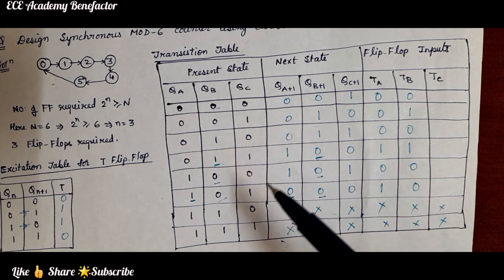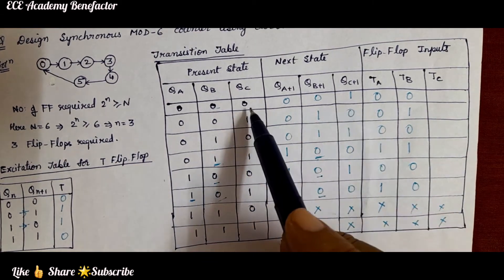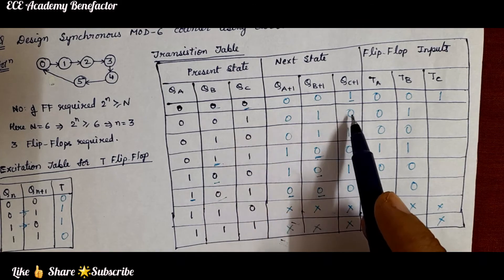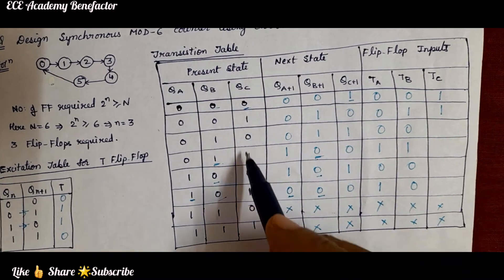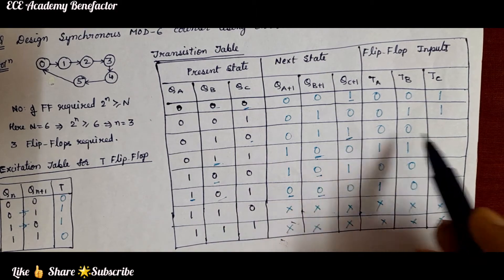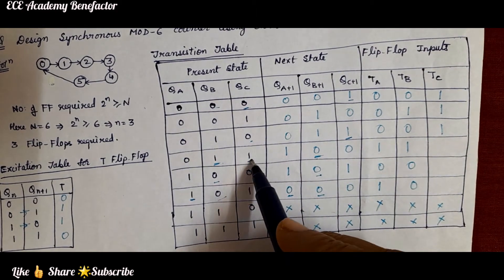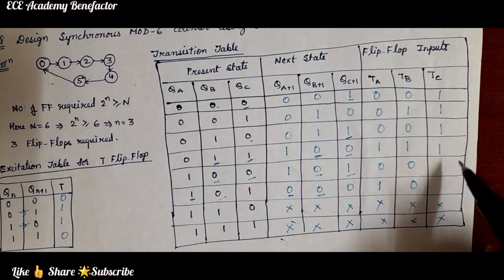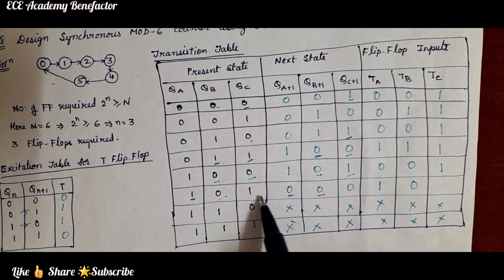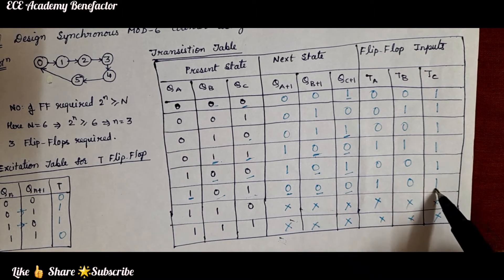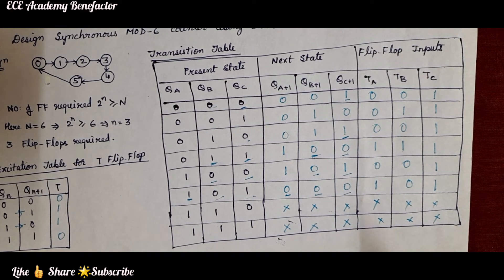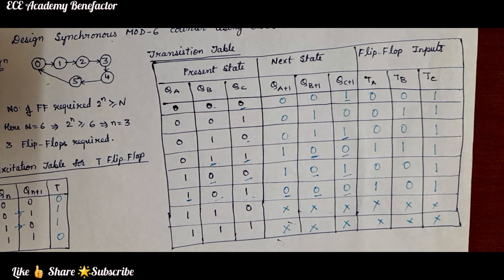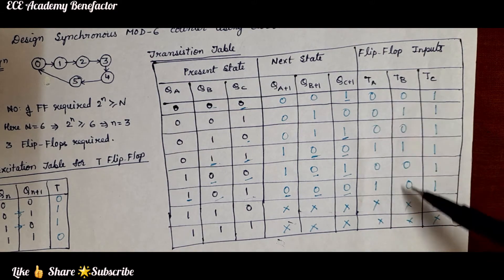Coming to the TC column, we compare QC and QC+1. QC alternates each state, giving transitions 0→1, 1→0, 0→1, 1→0, 0→1, 1→0 for states 0 through 5. Whenever there is toggling from 0 to 1 or 1 to 0, TC is 1. So TC equals 1 for all states 0 to 5. We have now obtained all flip flop inputs TA, TB, and TC.